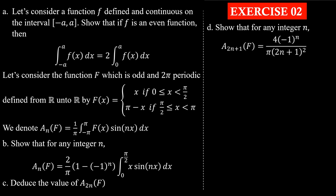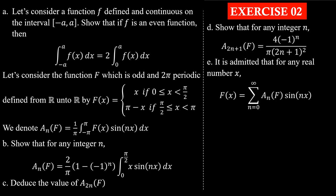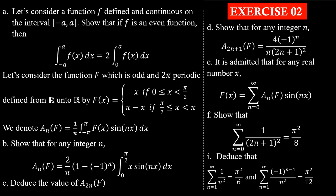Part D: show that for any integer n, a(2n+1, F) = 4(−1)ⁿ / [π(2n+1)²]. Part E: it is admitted that for any real x, F(x) equals the sum from n=0 to infinity of a(n, F) sin(nx). Show that the sum from n=0 to infinity of 1/(2n+1)² equals π²/8, and deduce that the sum from n=1 to infinity of 1/n² = π²/6, and the sum from n=1 to infinity of (−1)^(n−1)/n² = π²/12.